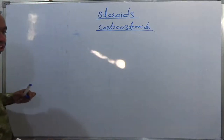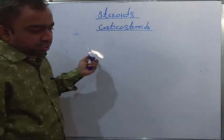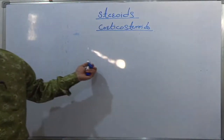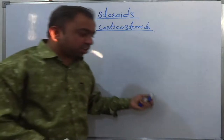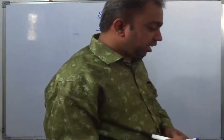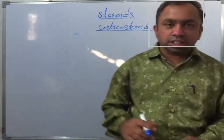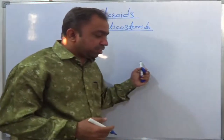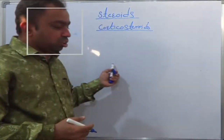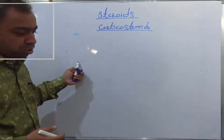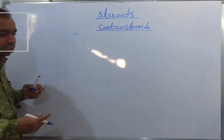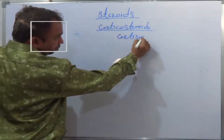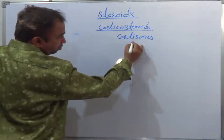Adrenal cortex hormones — these are secreted by the adrenal cortex gland. There are 19 different steroid hormones secreted by the adrenal gland. Corticosteroids are of two types.